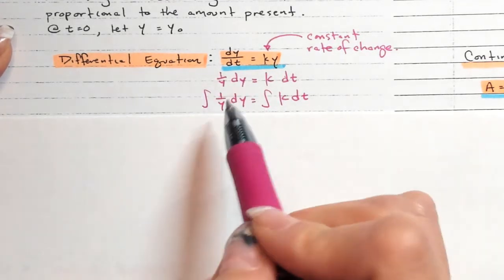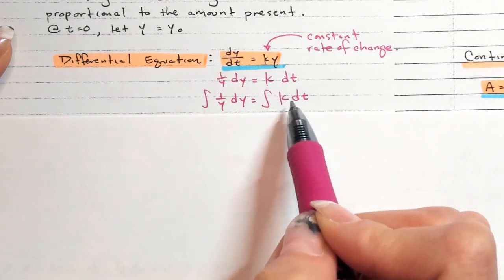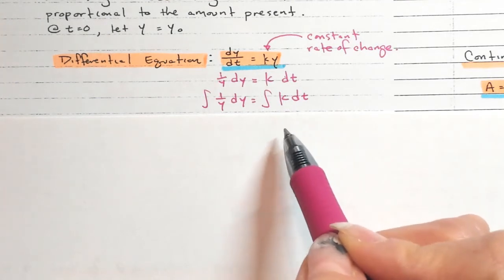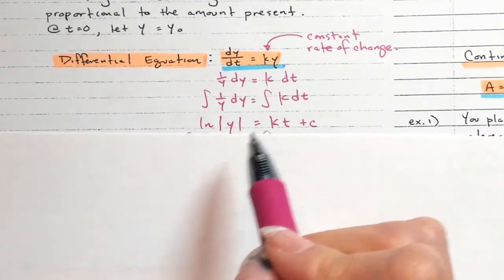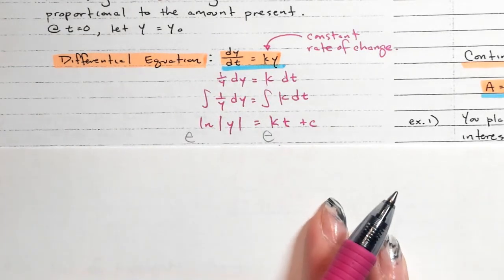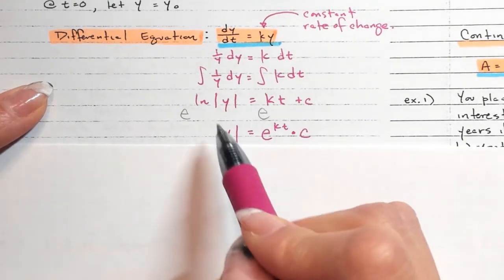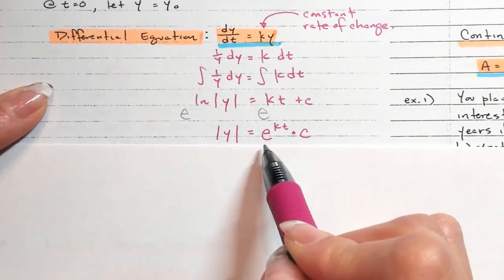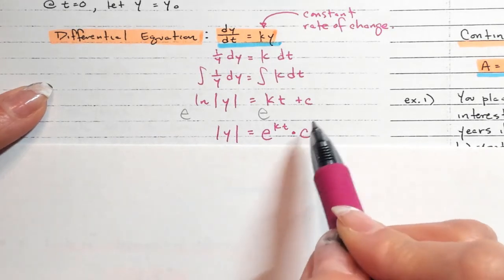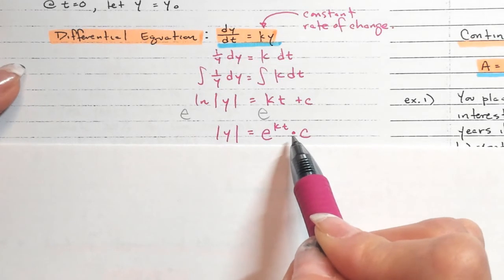The anti-derivative of the left side is ln of the absolute value of y. On the right side, k is a constant — not a variable — so the anti-derivative of k is k·t, just like the anti-derivative of 5 would be 5t. Then we raise both sides as exponents of e. You end up with y equals e^(kt) times e^c, and since e to the power of some constant is just another constant, that's written as C·e^(kt).